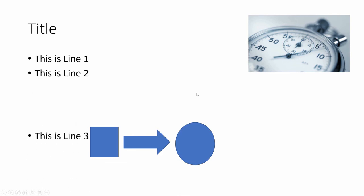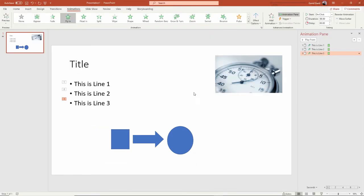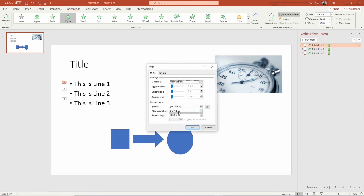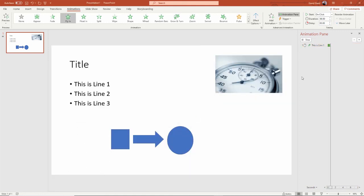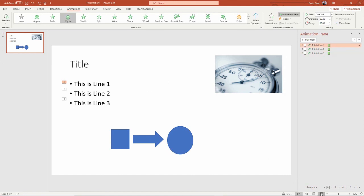There are some instances when, under effect options, you want to say that the text will animate by word or by letter. So that it comes up a little bit more dramatically. When I click it, it actually comes up like this. So you've got some extra things depending upon what you're animating to jazz up your PowerPoint slides.